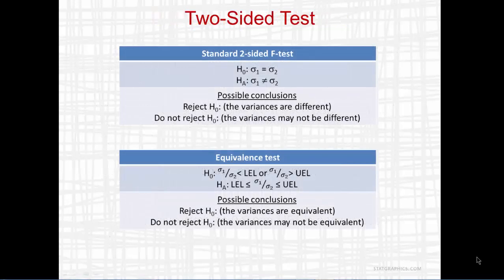This slide compares a standard two-sided hypothesis test to a two-sided equivalence test. In the standard hypothesis test, the null hypothesis is that the two standard deviations are equal, and the alternative hypothesis is that the two standard deviations are not equal. Possible conclusions are either to reject H0 and conclude that the variances are different, or not reject H0, in which case the variances may not be different.